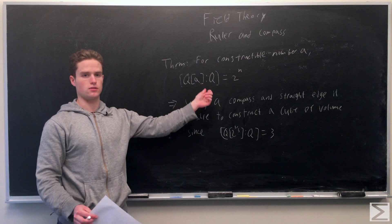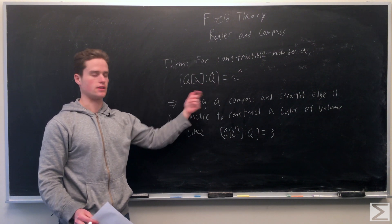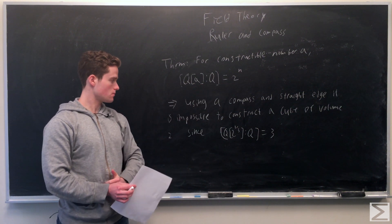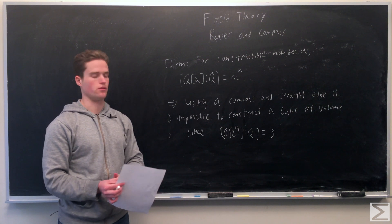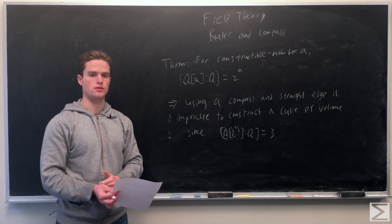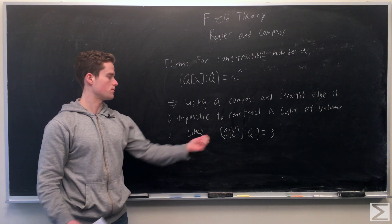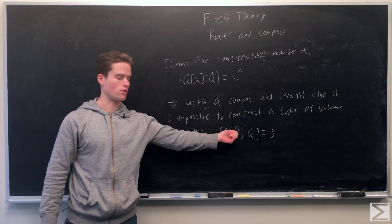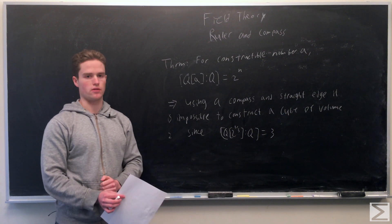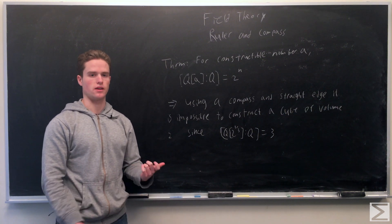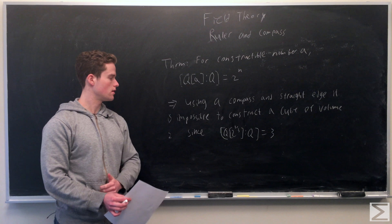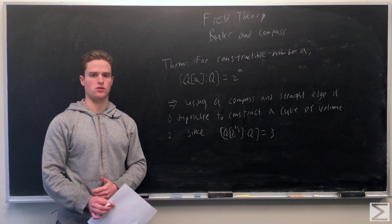This theorem, in fact, shows some constructions are impossible, such as trying to construct a cube with volume 2. That would imply the edges have length cube root of 2, and the extension Q with cube root of 2 appended over Q has degree 3, which is not a power of 2. We cannot construct the edges of this cube. That's an impossible construction.